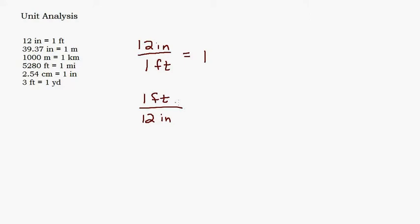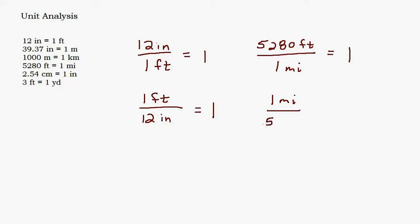Hopefully you came up with 1. It's not 1 inch, it's not 1 foot, it's just 1. If I take the distance 12 inches and divide it by 1 foot — how many 1-foot lengths go into 12 inches? — the answer is 1. Similarly, 5,280 feet equals 1 mile, so 5,280 feet divided by 1 mile is also 1. Any conversion factor expressed as a fraction — one value in the numerator and one in the denominator — is equivalent to 1.